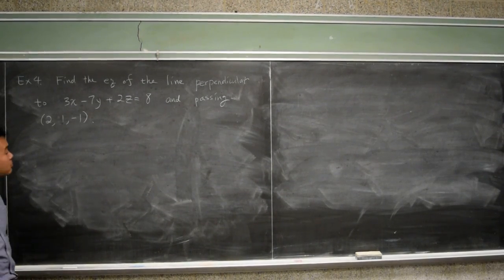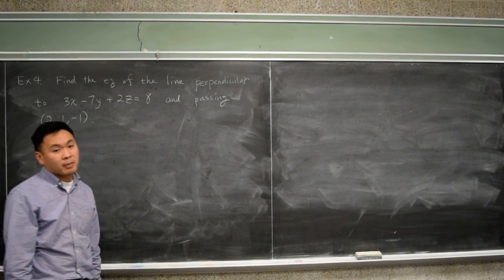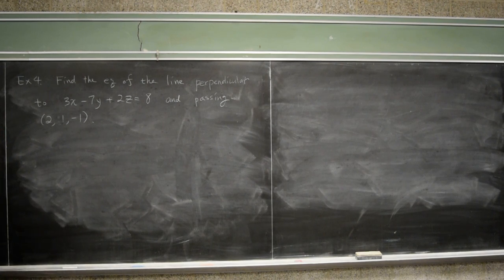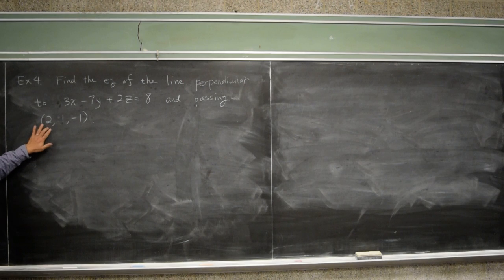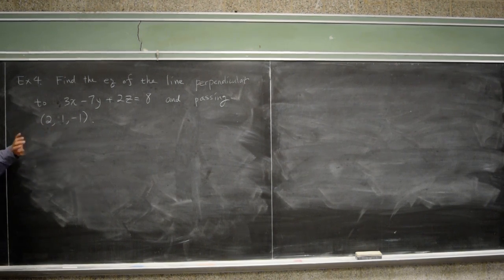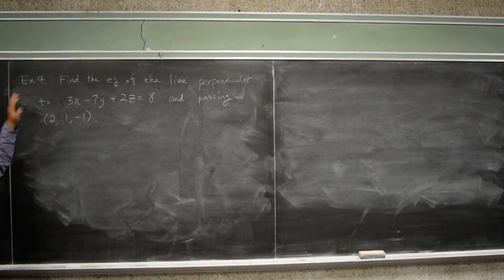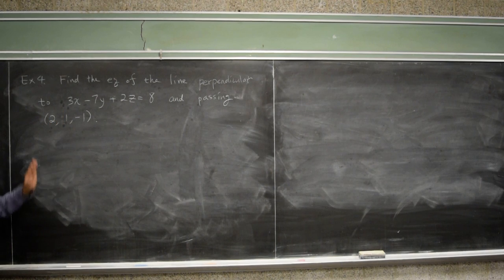This time, we'll ask for the equation of the line. So if you're given a plane equation and a point outside the plane, how do you find the equation of the line that's perpendicular to it passing through this point?